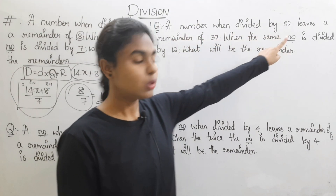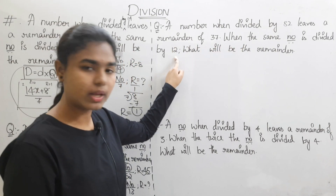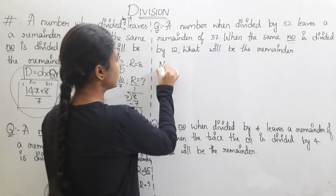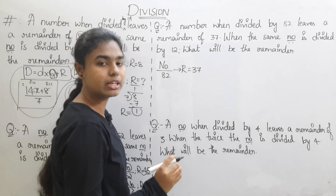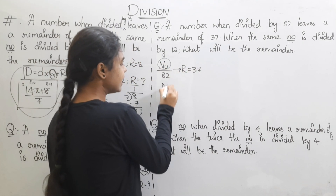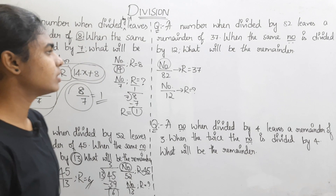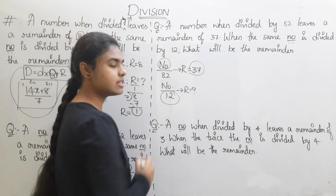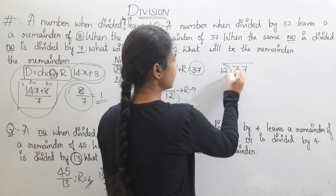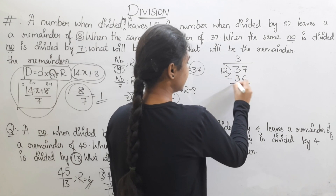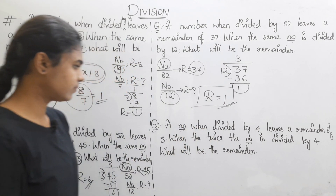A number when divided by 82 leaves a remainder of 37. When the same number is divided by 12, what will be the remainder? We apply the same approach — the remainder is 1. Very simple. Next question.